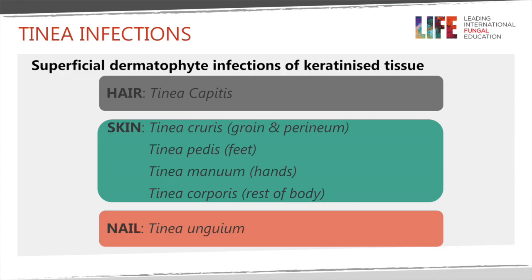If it's on the skin, depending on the part of the skin where it's found, they have different names. So if it's in the groin or the perineum, that's called tinea cruris. If it's on the feet, that's tinea pedis. Tinea manuum is tinea infection of the hands. Tinea corporis is anywhere else on the body other than what's been listed. And when you have tinea infections of the nail, that is referred to as tinea onguem.